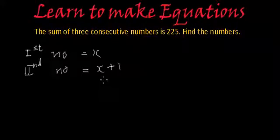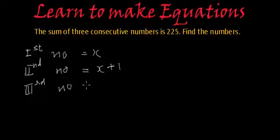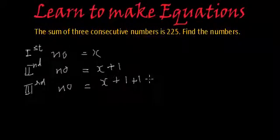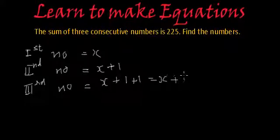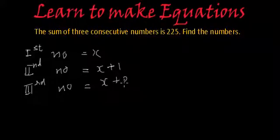And what can you say about the third number? The third number will be one more than its previous number, that is x plus 1 plus 1, which is x plus 2. So we can directly write the third number will be x plus 2. So these will be three consecutive numbers.